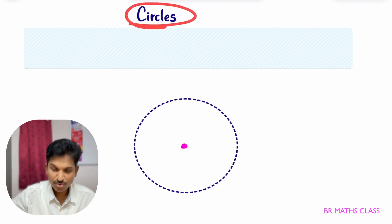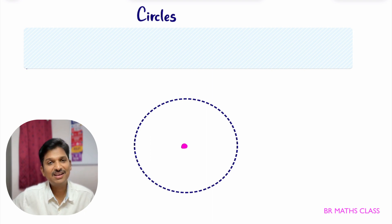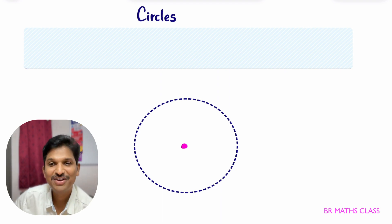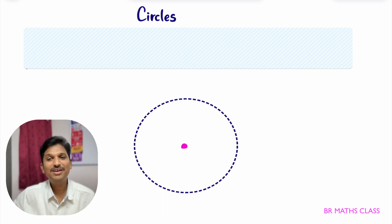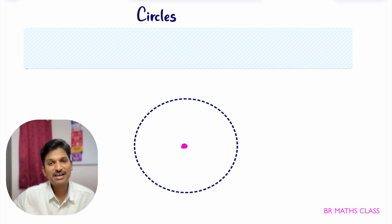The first concept is circle. First thing: the definition of circle. What is a circle? You cannot say that a circle is just a round figure. Yes, of course, a circle is a round figure, but the point is — what is the mathematical definition of a circle? How do we define a circle mathematically?